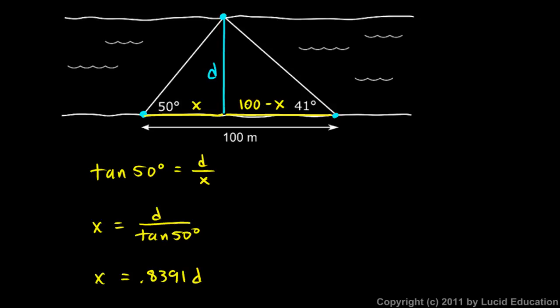Now let's look at the triangle on the right. I have a 41 degree angle here. So the tangent of 41 degrees will be opposite over adjacent. Tangent of 41 degrees will be D over 100 minus x. And then solve that for x.